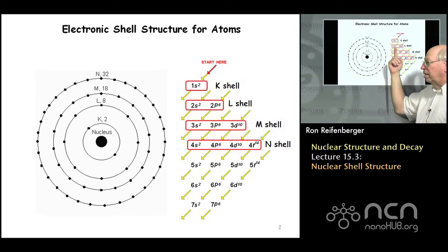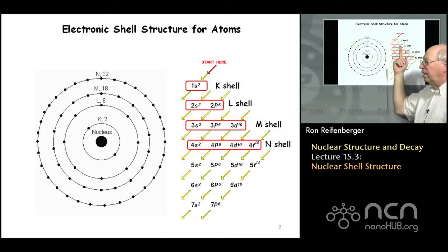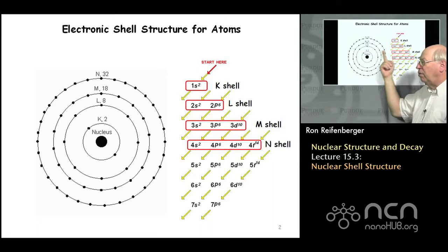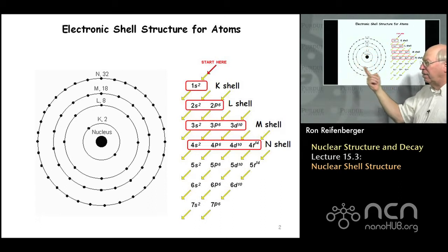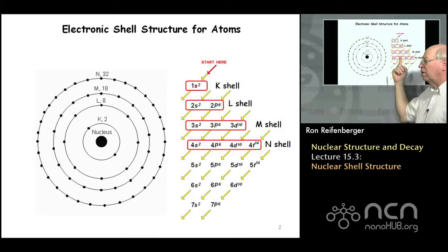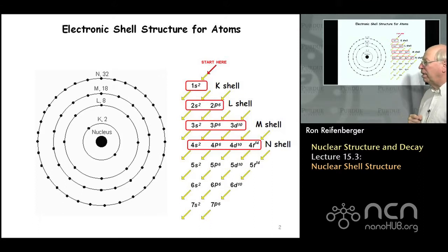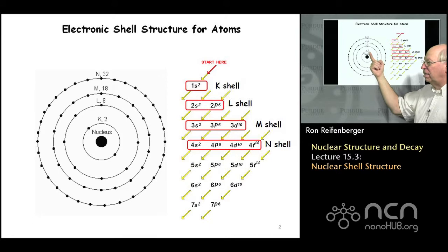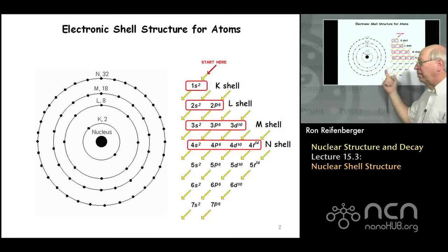The principal quantum number N equals two gives rise to the L shell electrons, and because of the degeneracy of these various electronic states, this L shell is allowed to contain eight electrons: two from the 2s orbital and six from the 2p orbital. The different shells correspond to the same principal quantum number N, and these shells give rise to electrons containing 2, 8, 18, and 32 electrons based on the degeneracy of these quantum states.